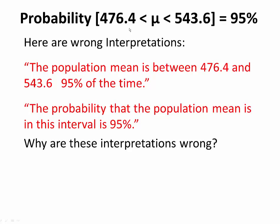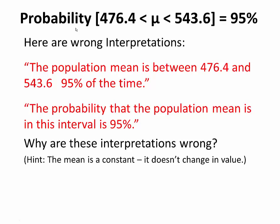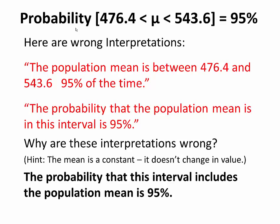The interval is the stochastic process that bounces around. If we draw a different sample, we get a different confidence interval. If we have done everything correctly, 95% of the confidence intervals constructed in that way would contain the true population mean. We might say: the probability that this interval includes the population mean is 95%.